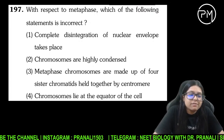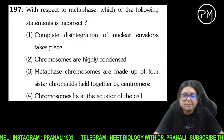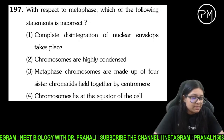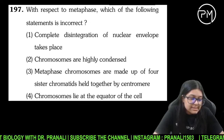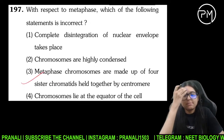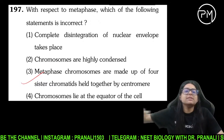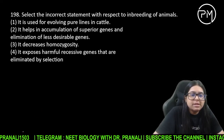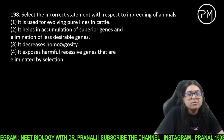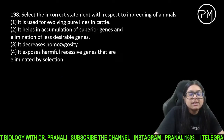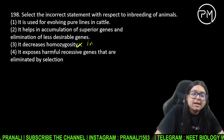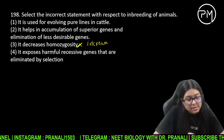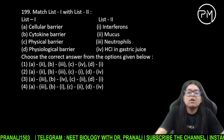With respect to metaphase, incorrect kya hai? Sister chromatids metaphase mein by centromere aligned hote hain middle mein. Incorrect with respect to inbreeding — inbreeding harmful recessive gene ko expose kar deti hai. Homozygosity se increase hoti hai na ki decrease. 198 ka answer 3 hai.